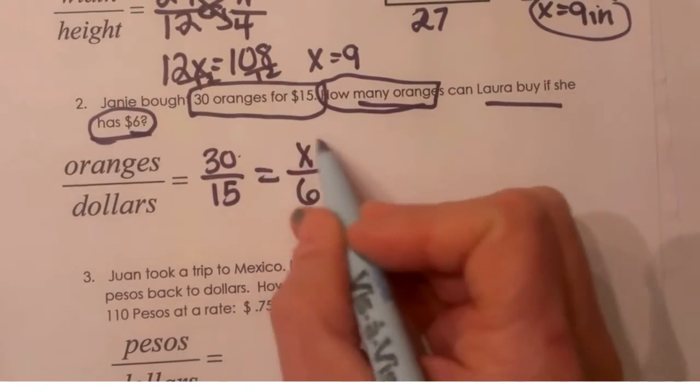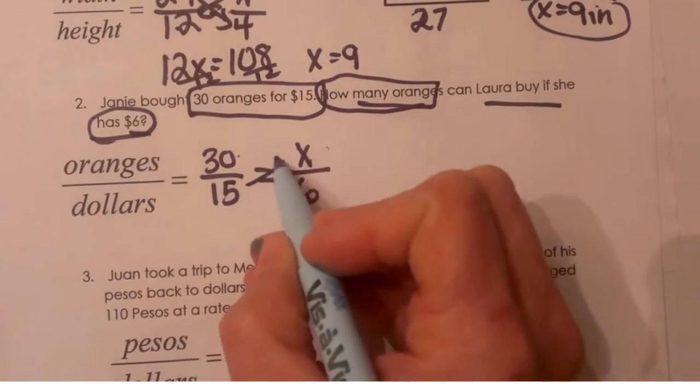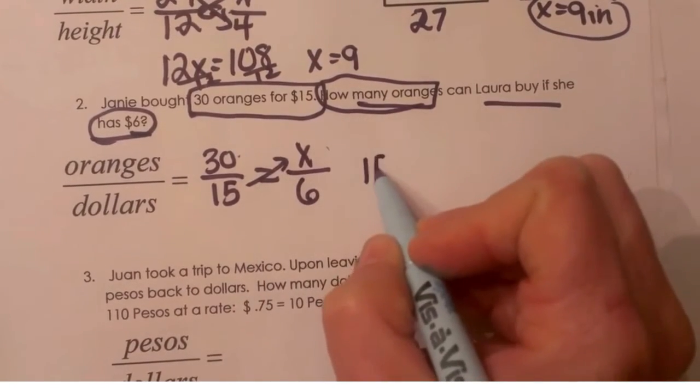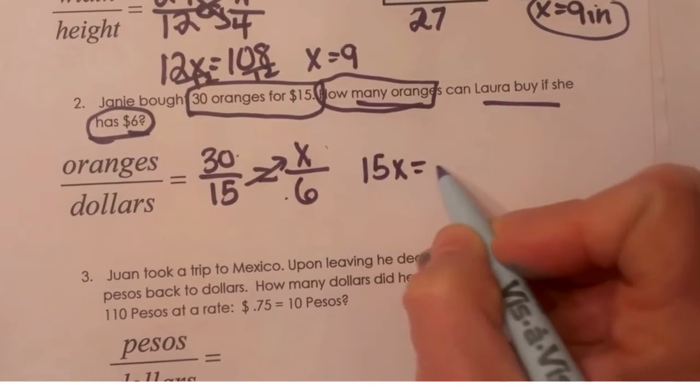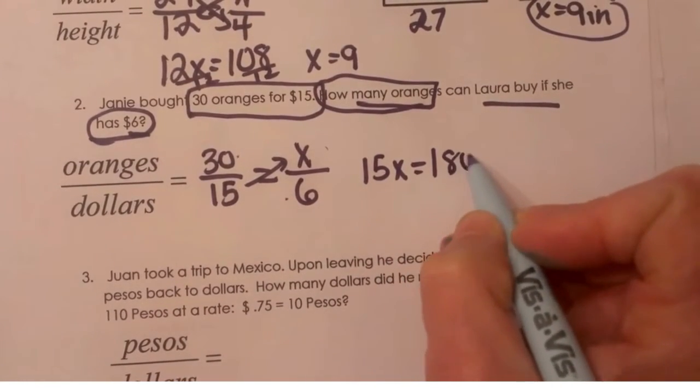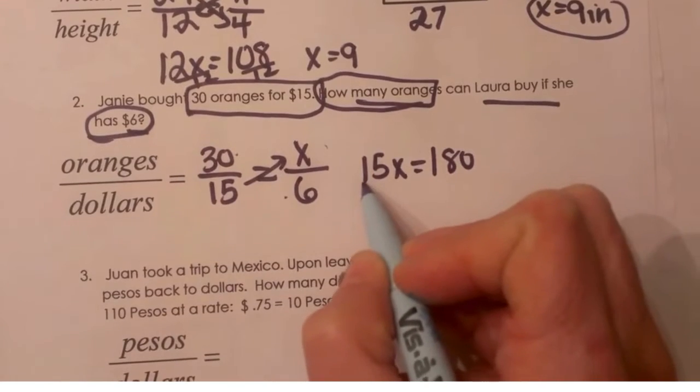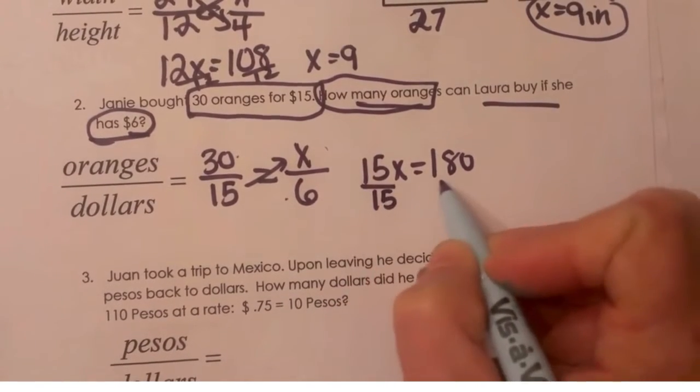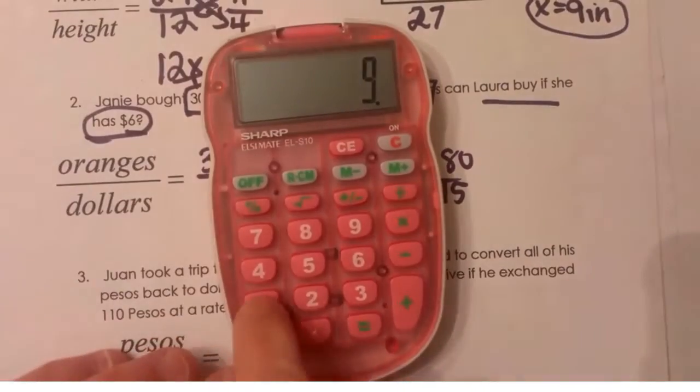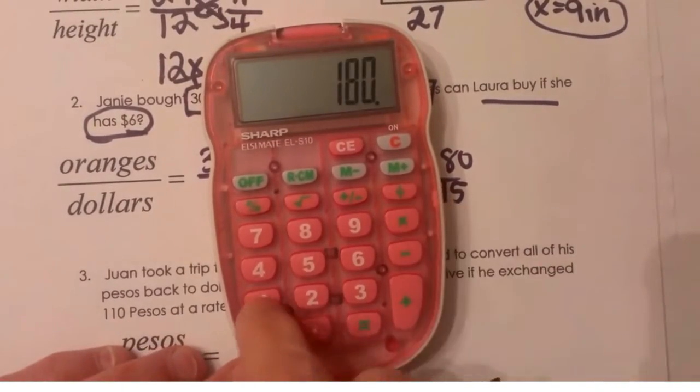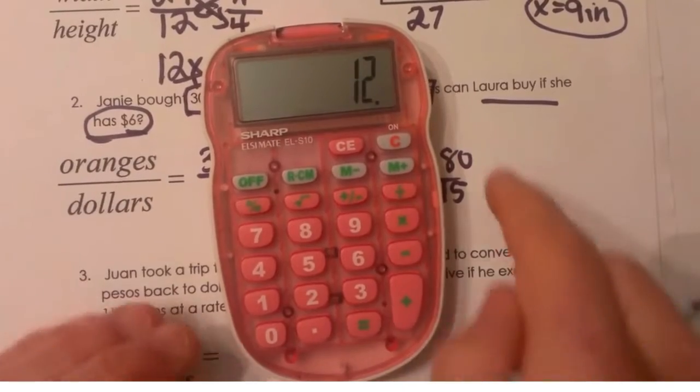So that's my unknown. And I can again do a cross product, 15 times X is 15X and 30 times 6 is 180. And then I can divide both sides by 15.